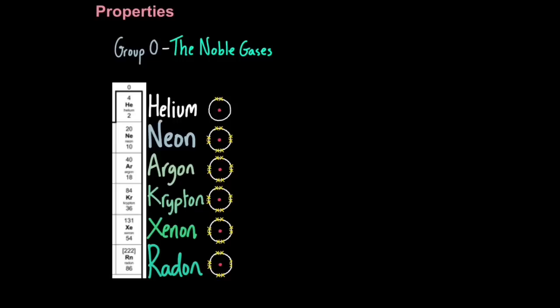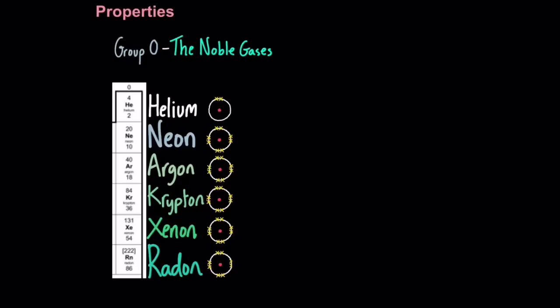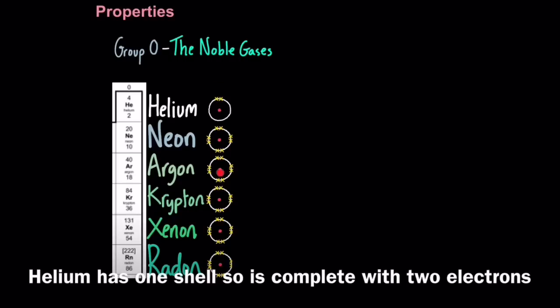You will find them in the far right hand side of your periodic table, the last group, sometimes called group 8 but also known as group 0. In your tables it will say group 0. But think of that 0 rather than the number zero, think of it as a circle, meaning complete, meaning all group 0 elements have a complete outer shell.